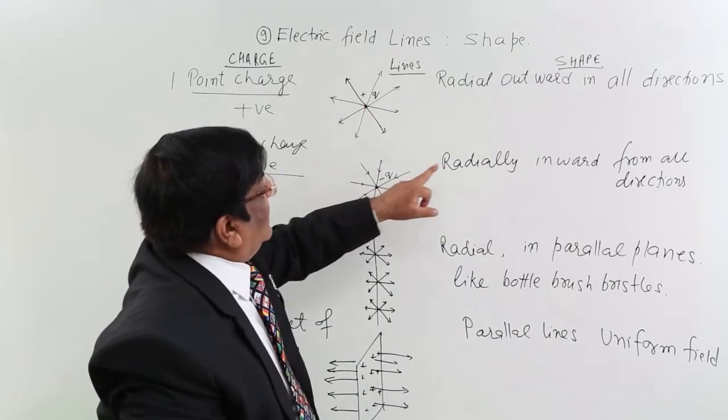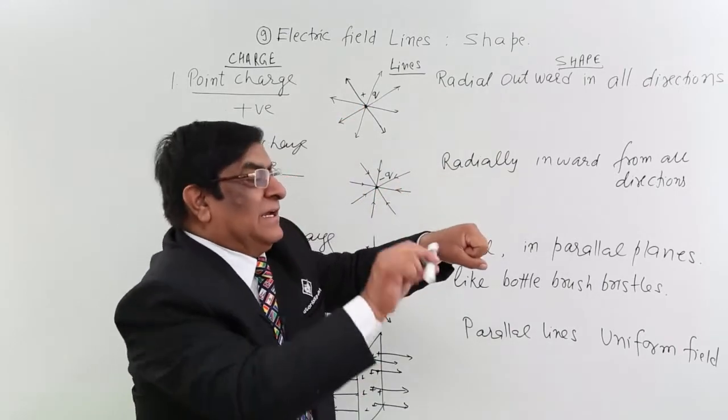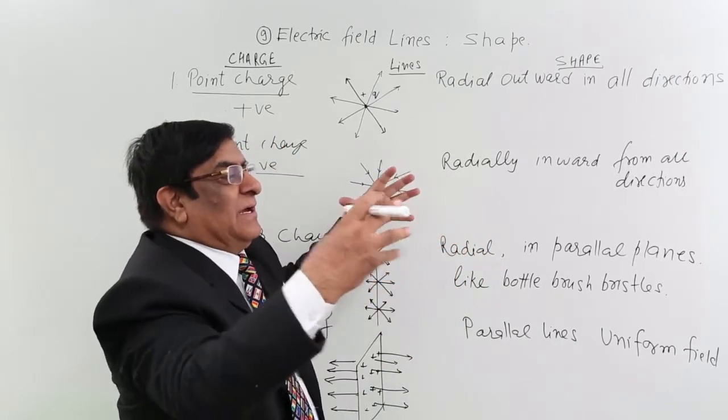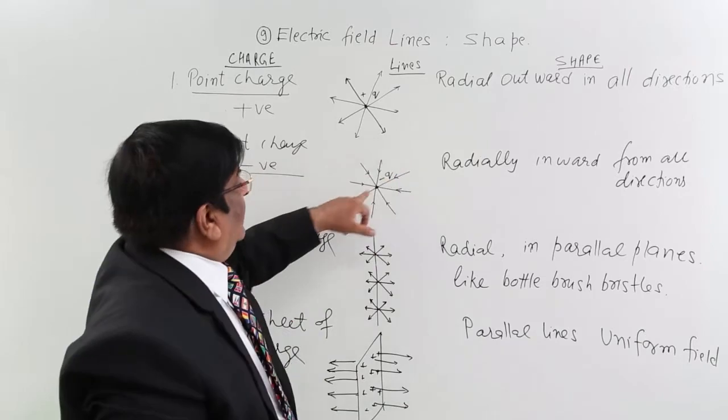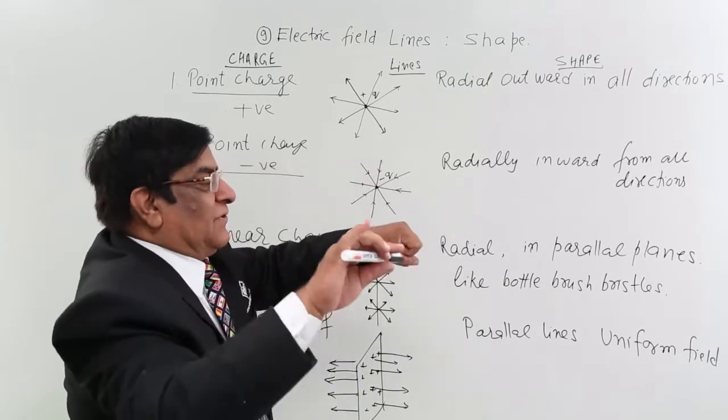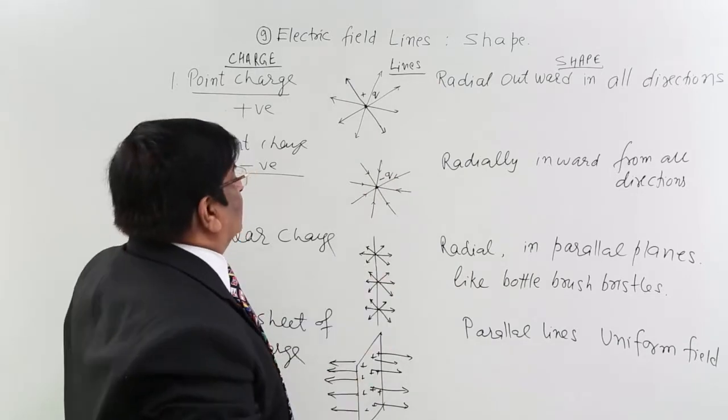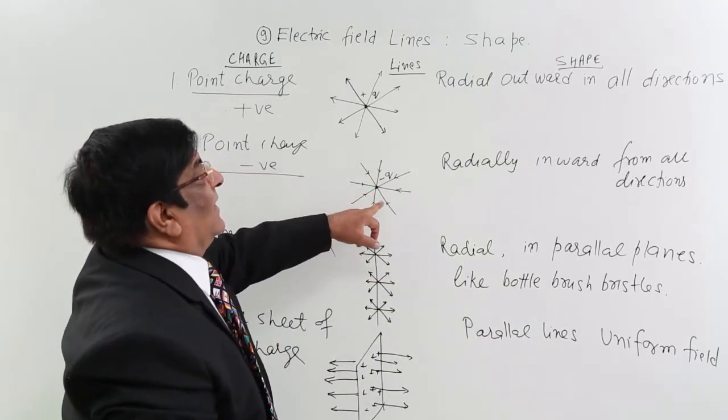But if it is negative, then again it is radial but it is inward. All the lines are coming here. But the shape will be again spherical. This from all the directions. From here, here, here, here. All these directions and in radial, inward direction.